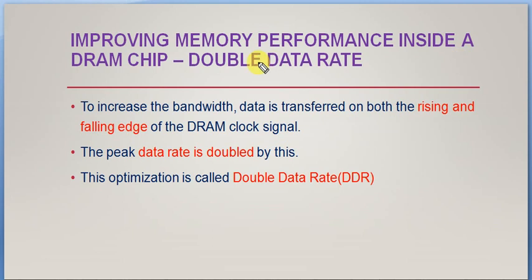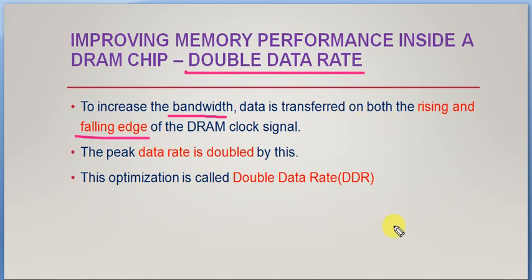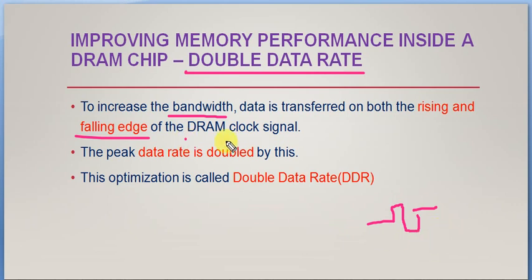Another mechanism for improving DRAM performance is Double Data Rate (DDR). To increase bandwidth, data is transferred on both the rising and falling edges of the clock. Previously, data was only transferred on the rising edge; with DDR, transfer happens on both rising and falling edges, effectively doubling the data rate. This optimization — transferring data on both clock edges — is called double data rate.